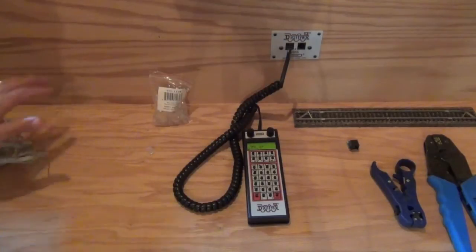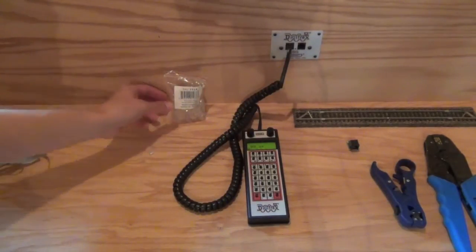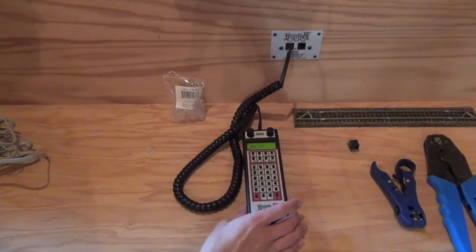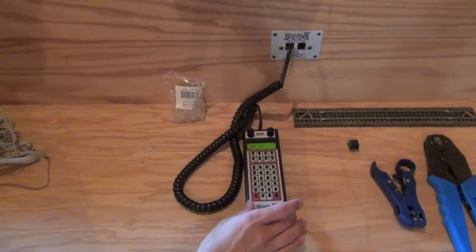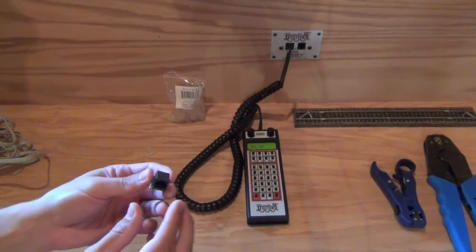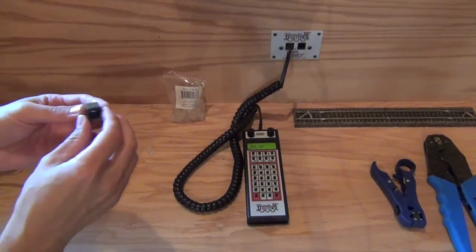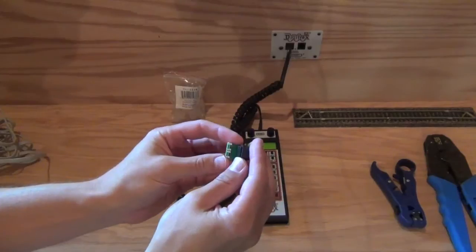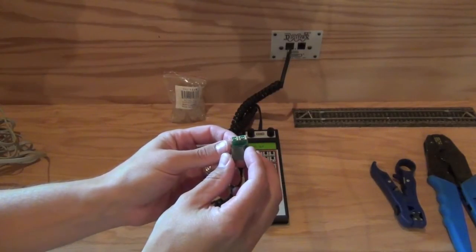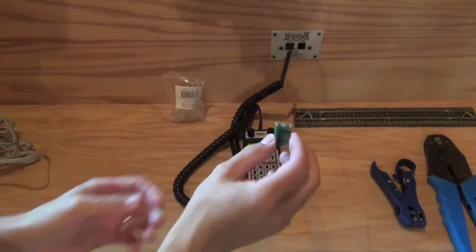So you're going to need your six-wire data cable, you're going to need your RJ-12 connectors, you're going to need your Digitrax system with a throttle plugged in. The track power does not need to be on. I have my LT-1 connector tester that came with my Super Chief, and we'll use this later.